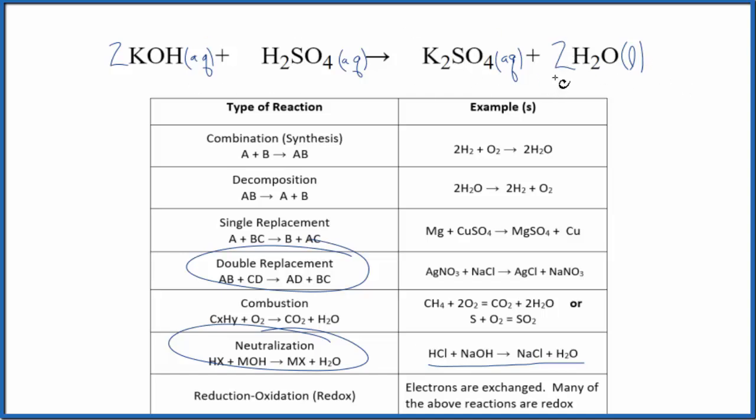Everything else is balanced. So that's the balanced equation for KOH plus H2SO4. This is Dr. B with the type of reaction for potassium hydroxide plus sulfuric acid. It's both a neutralization and a double displacement reaction. Thanks for watching.